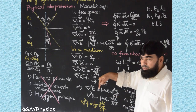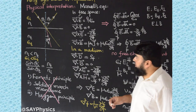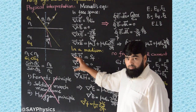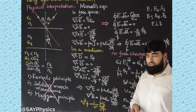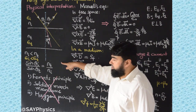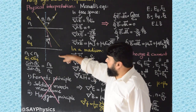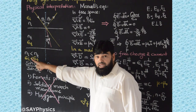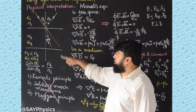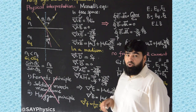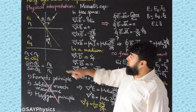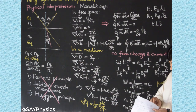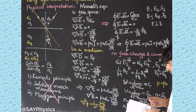When an electric field comes into a material, the positive and negative charges inside polarize, generating a field that opposes the external electric field, reducing it. The dielectric constant tells us how much a material can withstand the external electric field. A high dielectric constant means it withstands more; a low dielectric constant means it cannot withstand the external field as well.